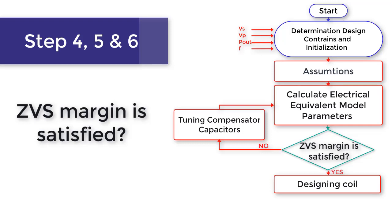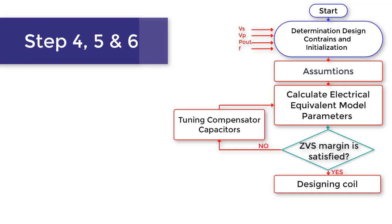After designing the coil, the type of Litz wire is chosen based on the closest values of wire diameter and number of strands to the calculated values.